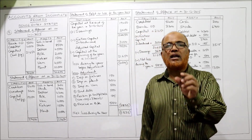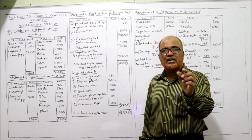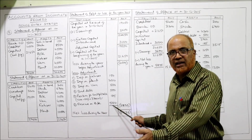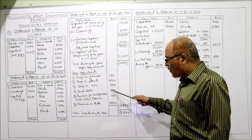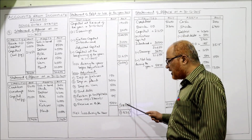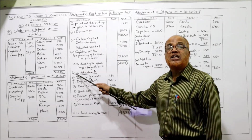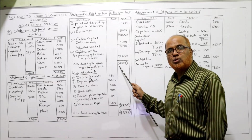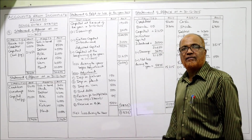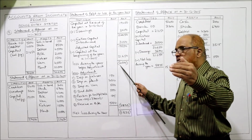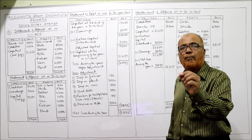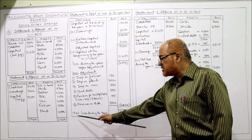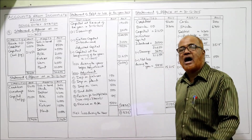Total of all adjustments is 3,835. These adjustments are deducted from profit. Since we already have a loss of 2,000, adding the adjustments of 3,835 gives a net loss of 5,835. This is the net loss during the year after all adjustments.